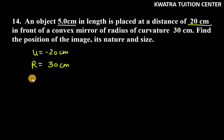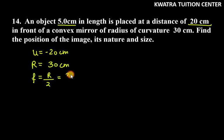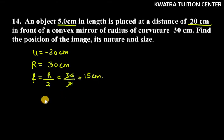Now we have to find f from r, and the formula is f equals r over 2. So f equals 30 over 2, which gives us f equals 15 cm.